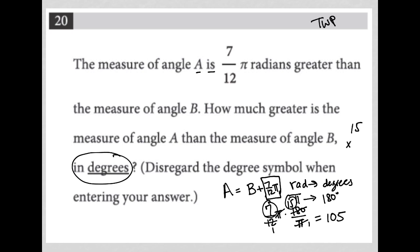For instance, just to make sure: 15 times 7, 7 times 5 is 35, 7 times 1 is 7 plus 3 is 10. So yes, this is accurate, 105. Our answer is 105 degrees. Of course, we do not have a degree symbol option on the test, so we just put 105.